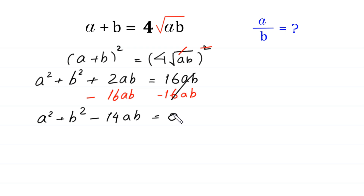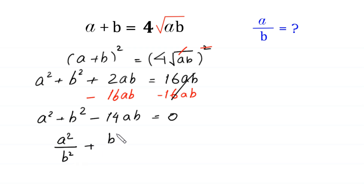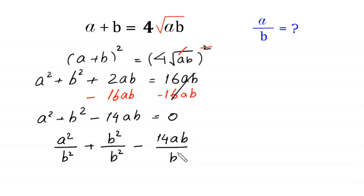Now from here we divide both sides of this equation by b squared. We divide each term of this equation by b squared: a squared divided by b squared, plus b squared divided by b squared, minus 14ab divided by b squared, is equal to zero divided by b squared.